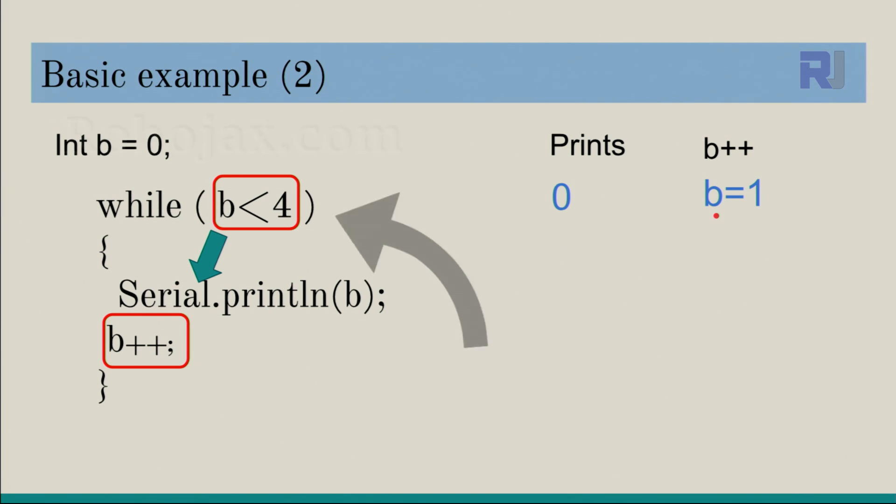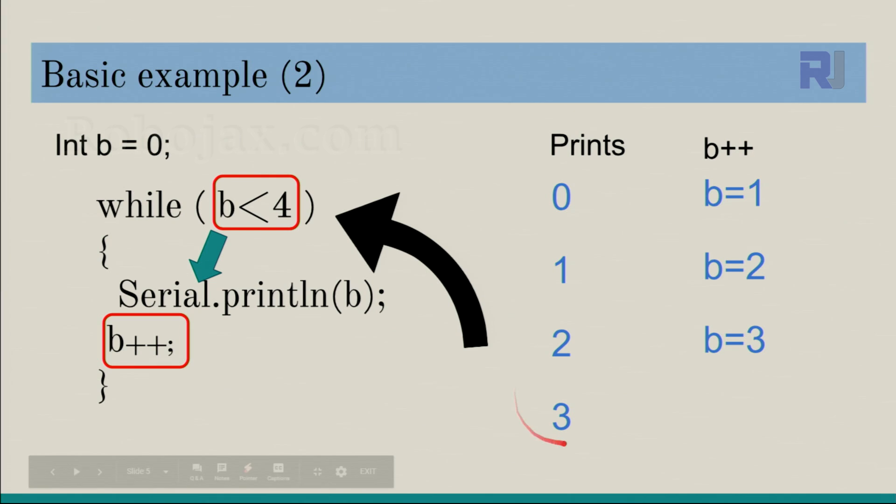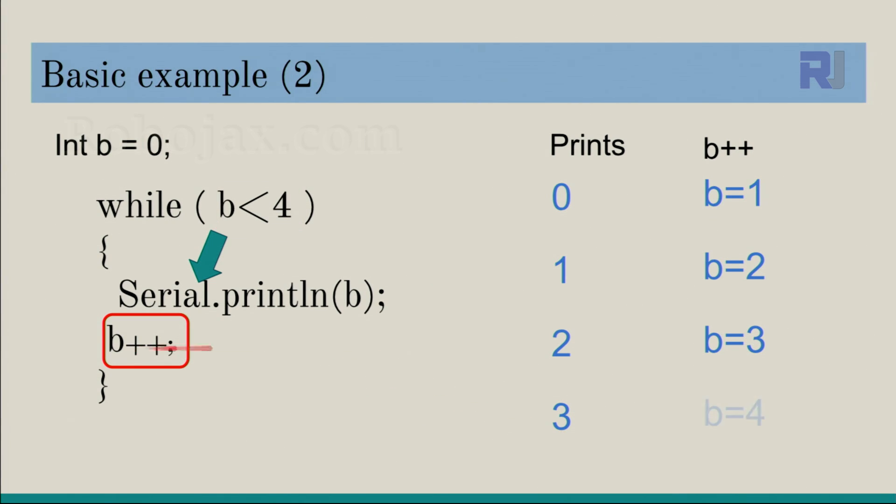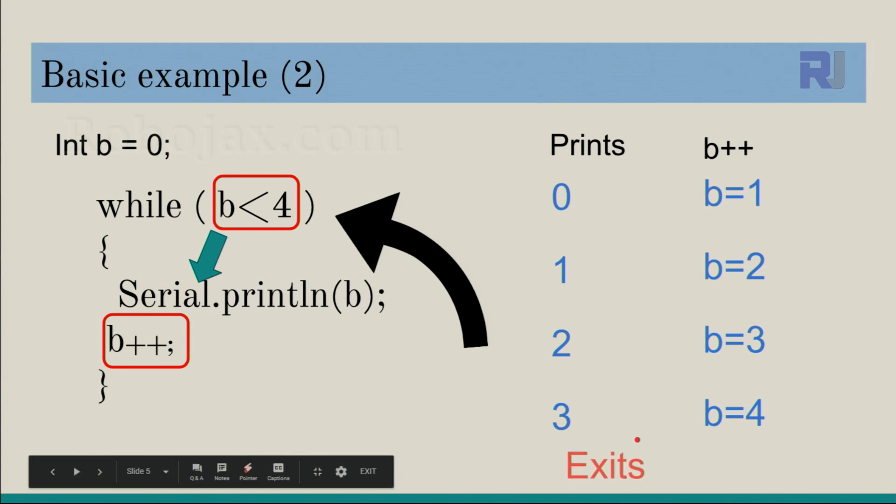B is one now. From here, code goes back here, compares. Is one smaller than four? True. Comes here, prints one, increments. B is two. Goes back here, compares. Is two smaller than four? True. Prints two, increment. B becomes three. Goes back there. Is three smaller than four? True. Now we print three, and b becomes four. When the code goes back here, compares, four is not smaller than four, exit.